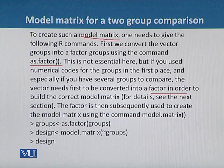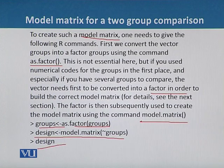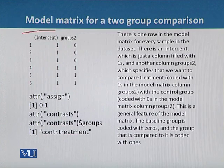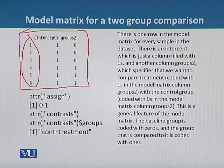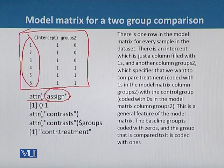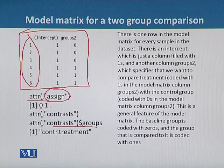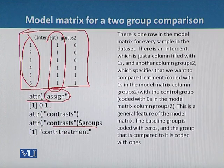The factor is then used to create the model matrix using the command model.matrix with the codes. We use as.factor on groups and assign it to 'design', and then we get the model matrix. We get a table with six rows — three values for control and three for treated samples. Using the attribute command with the argument 'assign', we assign zero and one to the intercept and groupT respectively. There is one row in the model matrix for every sample in the dataset, an intercept column filled with ones, and another column 'groupT' which specifies that we want to compare treated with the control group.